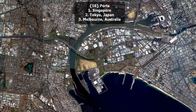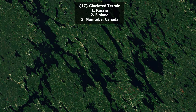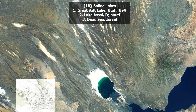Famous ports. Singapore; Tokyo, Japan; or Melbourne, Australia? Glaciated terrain. Russia, Finland, or Manitoba, Canada? Fascinating landscape.